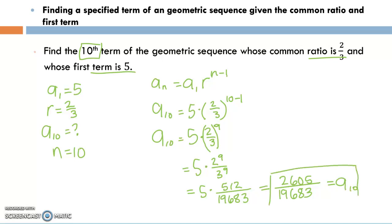And that's how we can find a specified term if we're given the ratio and the first term. But let's say we're not given the first term, I will make a video on that. You can go ahead and watch that.